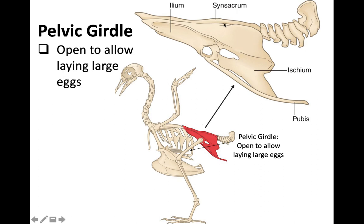The synsacrum is the fusion of the sacral vertebrae. Also making up the pelvic girdle are the ilium — the forward-facing part — the ischium, and the long skinny pubis. The pelvic girdle itself is relatively open, kind of a dish-shaped structure on top of the bird and very open underneath, which allows females to more easily lay relatively large eggs.